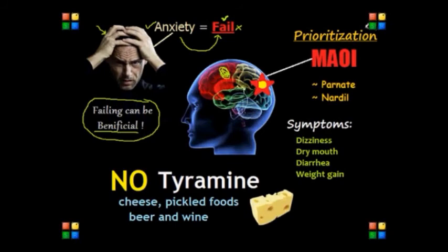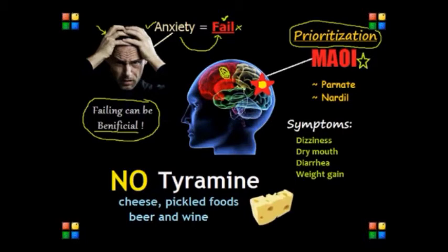In the last video, we covered prioritization related to anti-anxiety drugs in three subcategories: MAOIs, TCAs, and SSRIs. In this video, let's talk about MAOIs. MAOIs, or monoamine oxidase inhibitors, act by inhibiting the activity of monoamine oxidase, preventing the breakdown of monoamine neurotransmitters and increasing their availability, which gives positive effects on depression and anxiety.